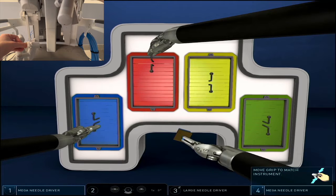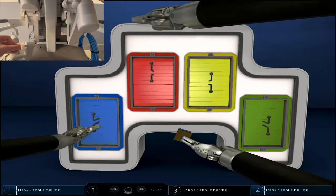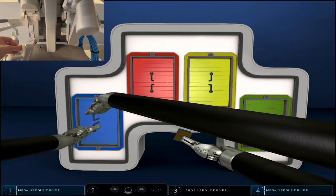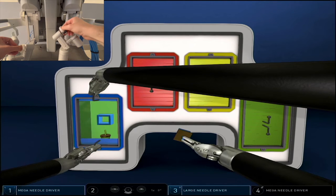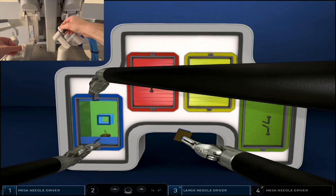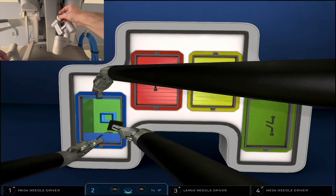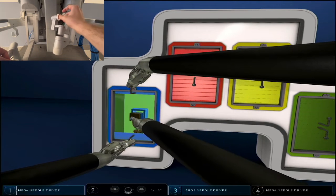Again, as the three arm relay exercises get a bit more complex, you're going to have a little bit more difficulty managing all three instruments at once. The exercise is not going to take points away if you take a little bit more time to reposition your instruments.